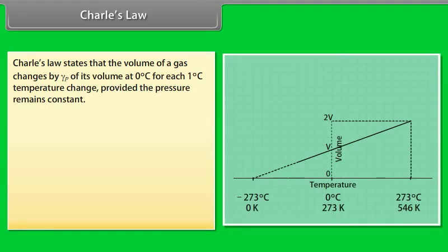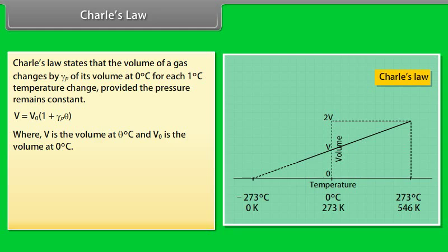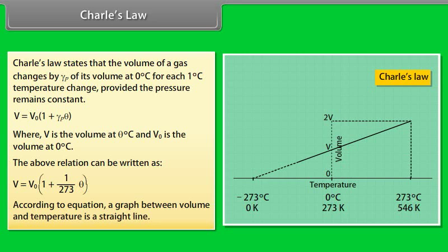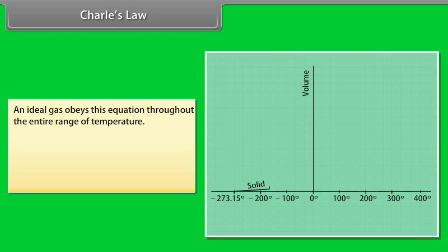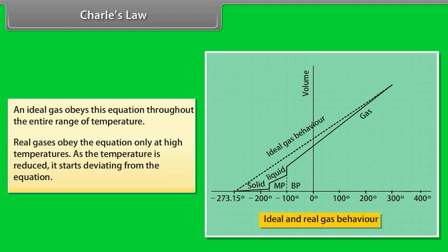Charles law states that the volume of a gas changes by gamma P of its volume at 0 degree centigrade for each 1 degree centigrade temperature change, provided the pressure remains constant. V is equal to V not multiply by 1 plus gamma P theta, where V is the volume at theta degree Celsius and V not is the volume at 0 degree centigrade. The above relation can be written as V equals V not multiply by 1 plus theta upon 273. According to equation, a graph between volume and temperature is a straight line. An ideal gas obeys this equation throughout the entire range of temperature. Real gases obey the equation only at high temperatures. As the temperature is reduced, it starts deviating from the equation.